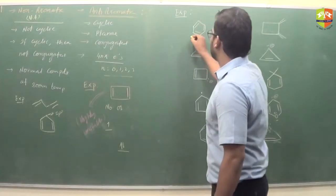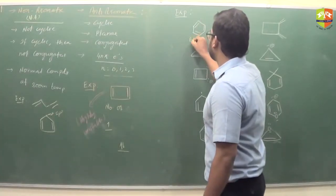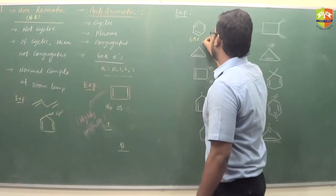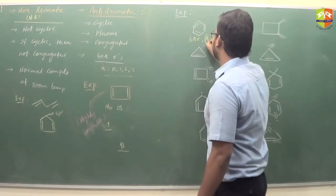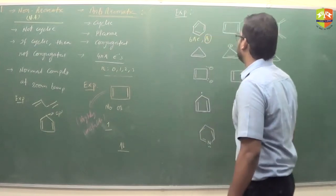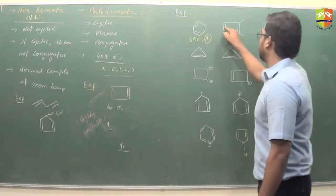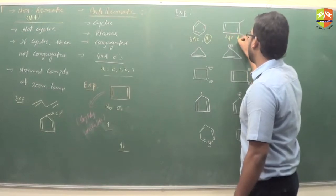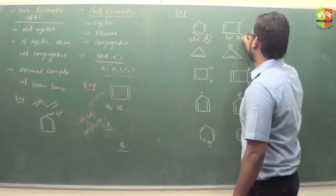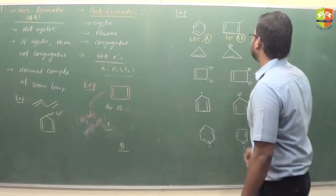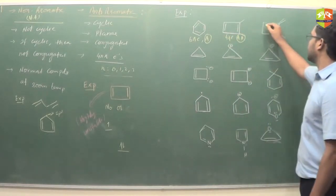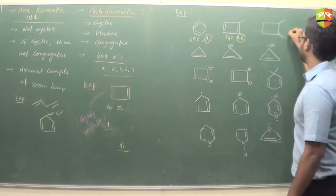We have 6 pi electrons and hence it is aromatic. We have 2 plus 2, 4 pi electrons, and it is anti-aromatic. This has sp3 hybridization, so it is non-aromatic.